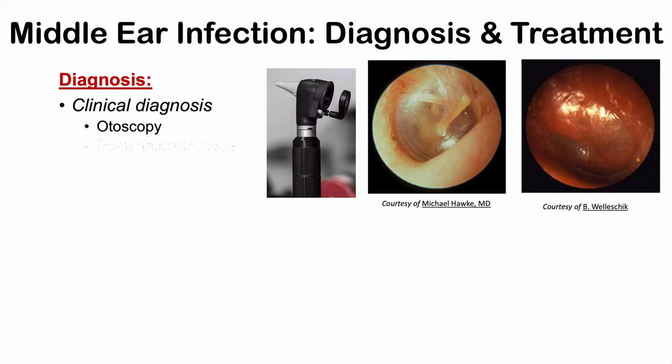A pneumatic otoscope can also be used — it sends a puff of air into the ear. In the case of a normal eardrum, that puff of air will move the eardrum. In the case of acute otitis media, that puff of air will not move the eardrum because there is fluid behind it.